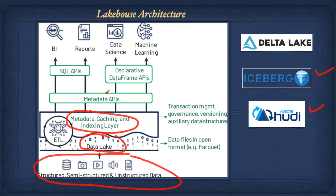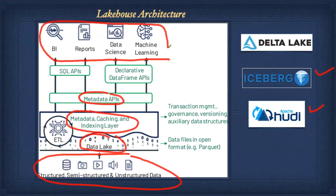A metadata catalog is also available — Databricks has the older Spark catalog and the newer Unity Catalog. The Unity Catalog enables data lineage and supports multiple catalogs, allowing you to implement a data mesh-style design.